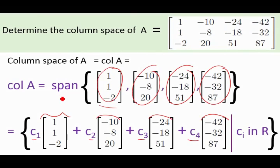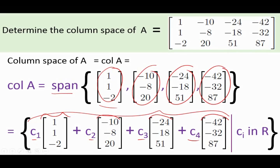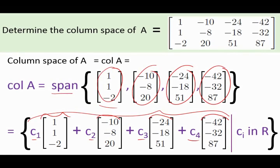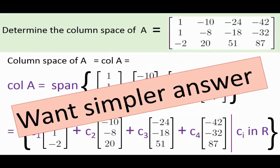Thus, when I take the span of vectors that live in R3, or take the linear combinations of vectors in R3, I'm going to get more vectors that live in R3. So I'm looking at a subspace of R3. We do not need four vectors to describe a subspace of R3, so we know we can simplify our answer.